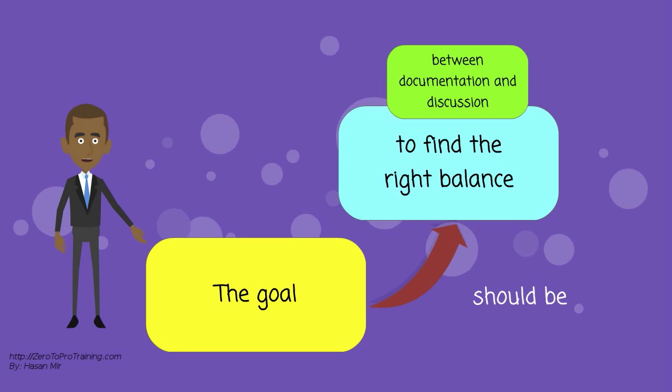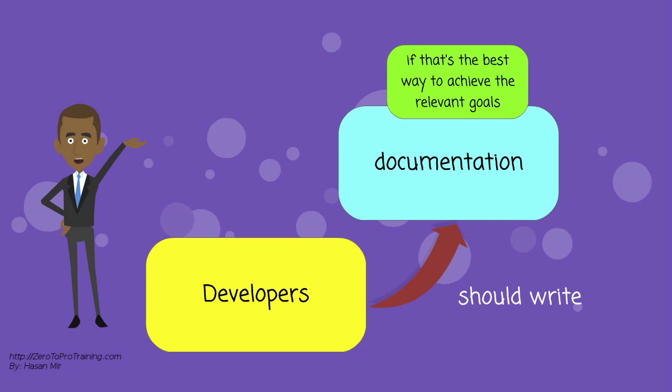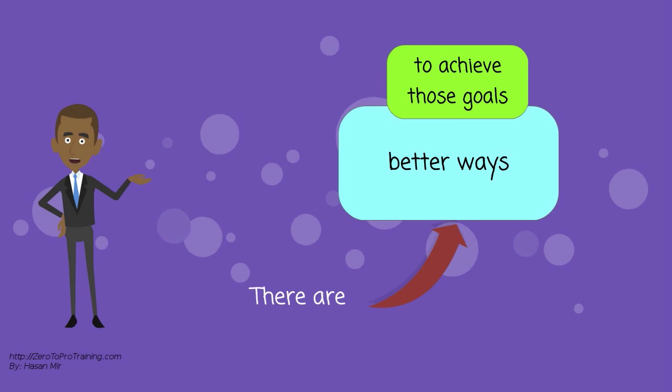The goal in agile should be to find the right balance between documentation and discussion. Developers should write documentation if that's the best way to achieve the relevant goals, but there are often better ways to achieve those goals than writing static documentation.